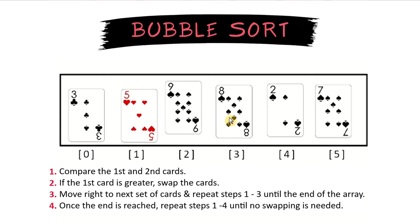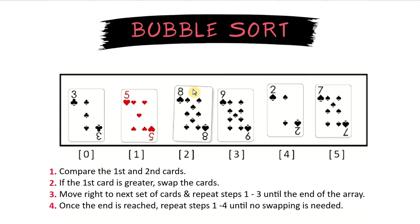We move on to the next pair of cards, which is 9 and 8. Since 9 is larger than 8, we swap these, and the 8 goes where the 9 was, the 9 where the 8 was.